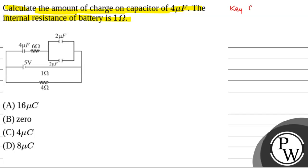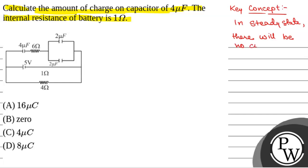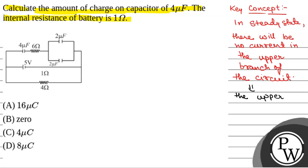First of all, we will see what the key concept is to solve this question. The key concept is: in a steady state, there will be no current in the upper branch of the circuit. This is because the capacitor does not allow DC current to pass through it and we have a purely DC supply. So, the upper branch of the circuit will fully behave as a capacitive circuit.